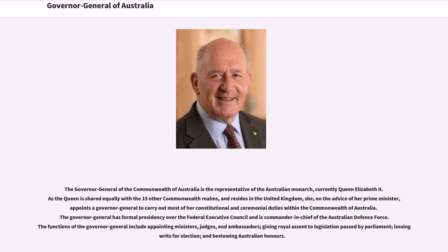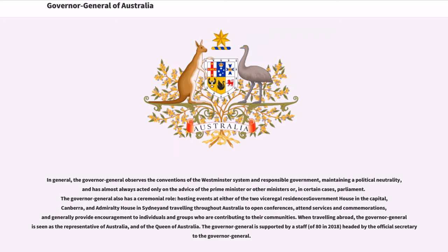The Governor-General has formal precedency over the Federal Executive Council and serves as Commander-in-Chief of the Australian Defence Force. The functions of the Governor-General include appointing ministers, judges, and ambassadors, giving royal assent to legislation passed by Parliament, issuing writs for election, and bestowing Australian honours. In general, the Governor-General observes the conventions of the Westminster system and responsible government, maintaining political neutrality, and has almost always acted only on the advice of the Prime Minister or other ministers or, in certain cases, Parliament.